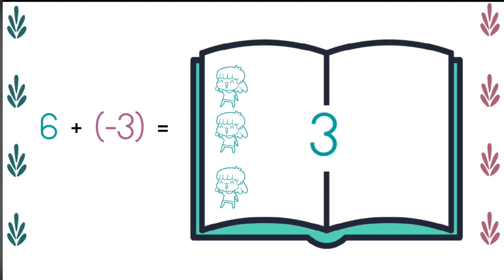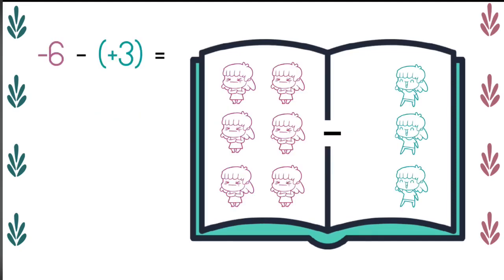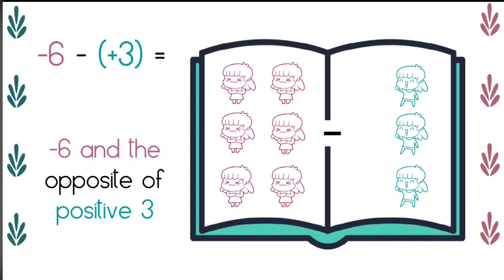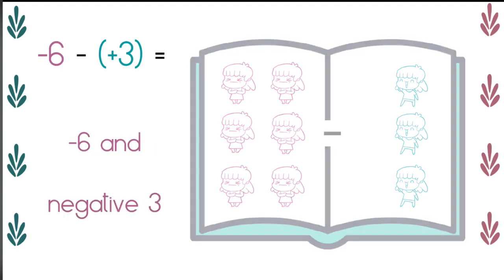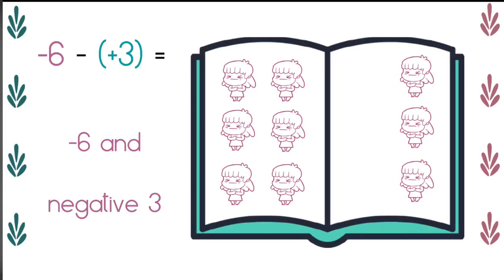The next problem. Negative six minus positive three. Again, let's replace the word minus with opposite of. Negative six and the opposite of positive three. What's the opposite of positive three? Well, it's negative three. So am I happy? Not so happy.